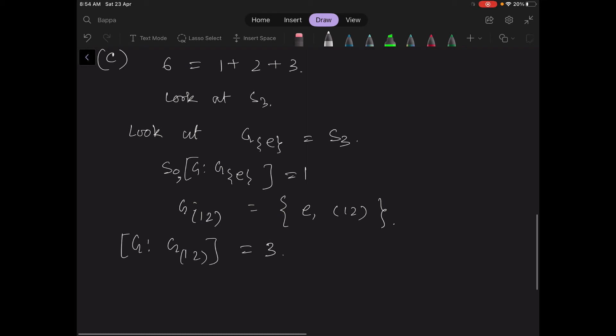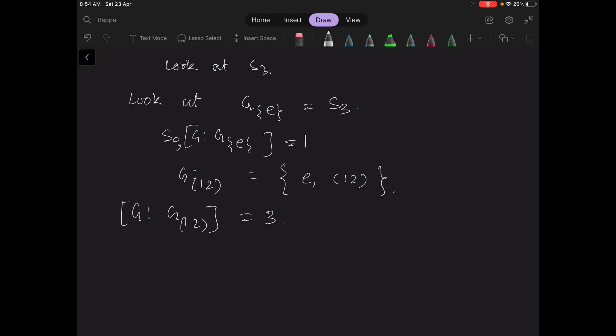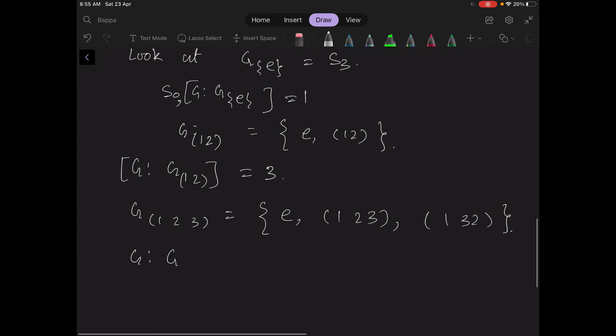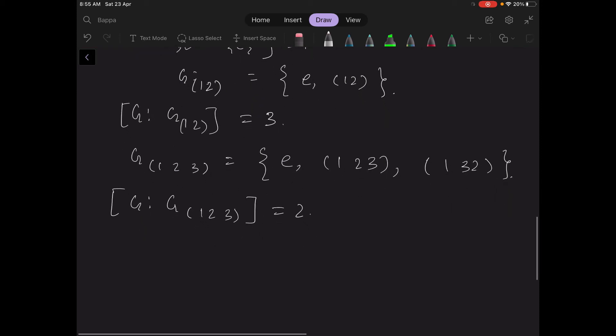And then G(1,2) has 3 cosets inside G. And now if you look at G(1,2,3), then this is equal to e, (1,2,3) itself, and (1,3,2) which is the inverse of (1,2,3). Then in G it has two cosets. So you see that |S3| is equal to 1 plus 2 plus 3.